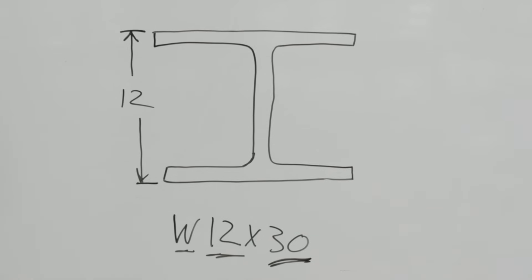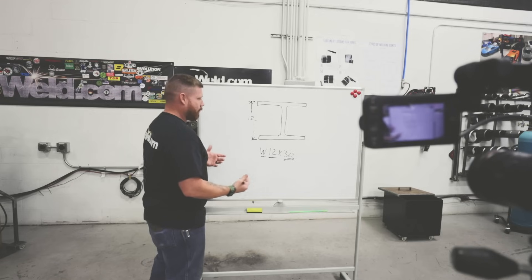The number here indicates the weight per linear foot. Now this isn't going to fluctuate at all. So if I had a W 12 by 30 and I cut off exactly one foot and throw it on a scale, it's going to hit 30 pounds.